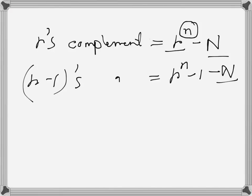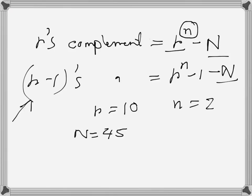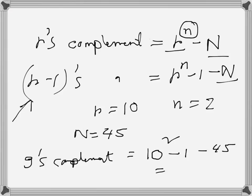Now when we go to the decimal number system, r becomes 10. For a two-digit number, n is equal to 2. Let's take the number 45, so uppercase N is 45. The 9's complement is the equivalent of (r minus 1)'s complement. So 9's complement becomes 10 squared minus 1 minus 45, which is 100 minus 1, giving us 99 minus 45, which equals 54.